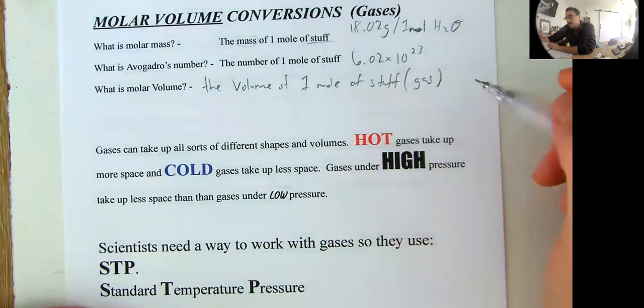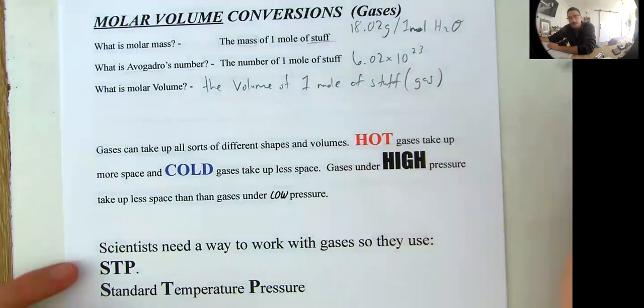So like the oxygen we're breathing, the nitrogen that's in the atmosphere, the carbon dioxide that's coming out of cars and airplanes, and methane that's coming out of cows.